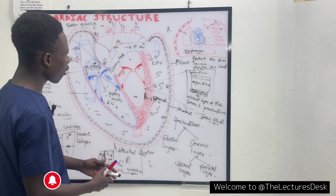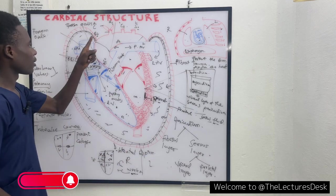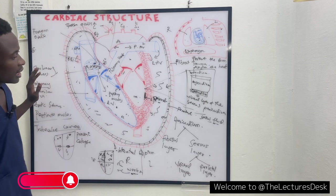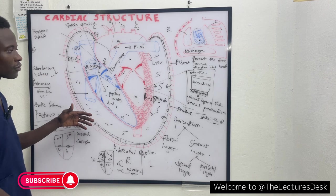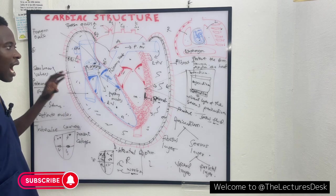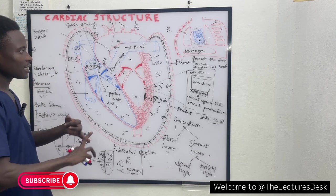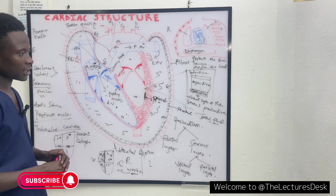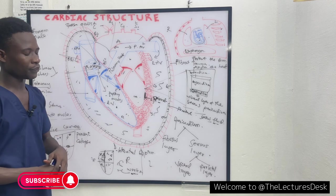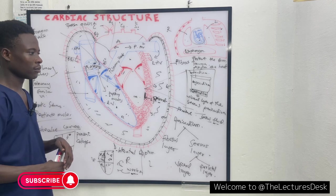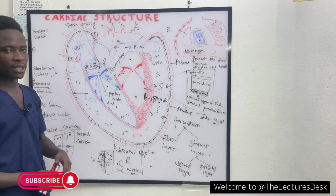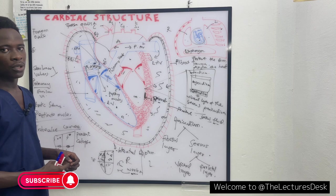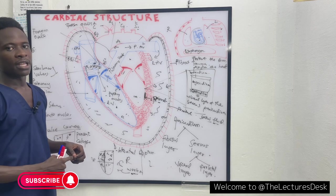This is the function of the sac-like structure, the pericardium, that protects the heart. As medical students, what we should know about the heart includes the cells, the parts, the cavities, its location, and its anatomical relationships — all of which are very important. This brings us to the end of today's lesson. If you find this video interesting, please like, comment, share, and subscribe to the channel.